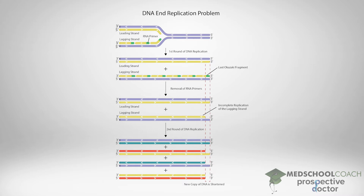Since the RNA primers are made of RNA, they have to be removed and replaced with DNA. This is done with a different DNA polymerase, which can only function if there is another piece of DNA before the RNA — which is fine for all Okazaki fragments except the last one. In the last Okazaki fragment, that RNA primer does not have DNA before it. There is no 3' hydroxyl group for DNA polymerase to work off of, so that RNA primer cannot be replaced with DNA. Since RNA is less stable than DNA, that RNA will degrade, leaving an overhang where the lagging strand failed to fully replicate.